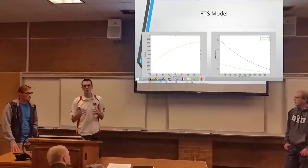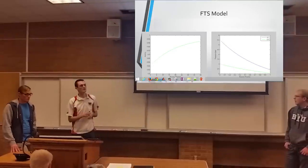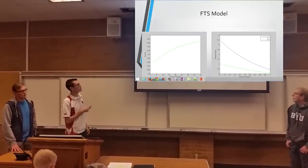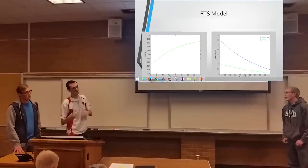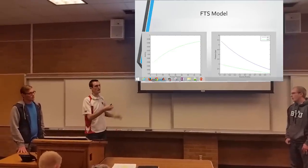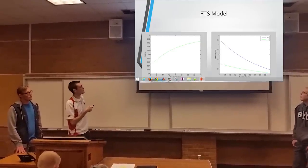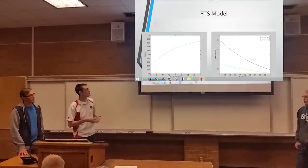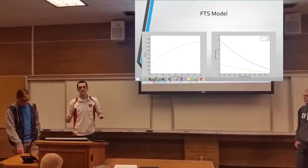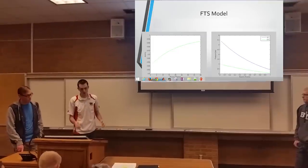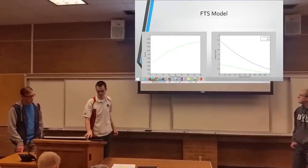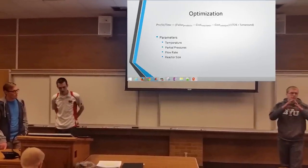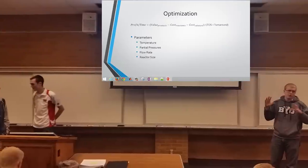Now we've got a model that we know works, but we really need to optimize it because we want the reaction to go as fast as possible. But we also don't want as much deactivation, because that will limit the reaction in the future. The challenge is that all of these are dependent on the same variables — temperature and pressures. So we decided to optimize the rate of profit.